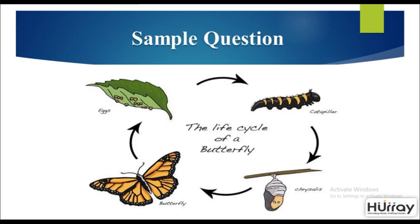Here is a sample question of what it might look like. As you can see, on the left at the beginning you have the eggs. Following that there is a caterpillar, then the chrysalis, and then the butterfly. It is an unending cycle.